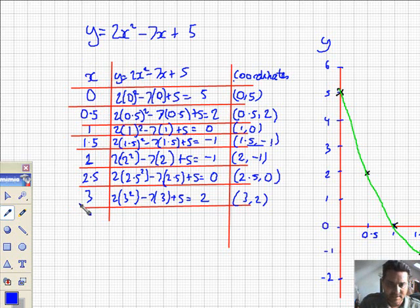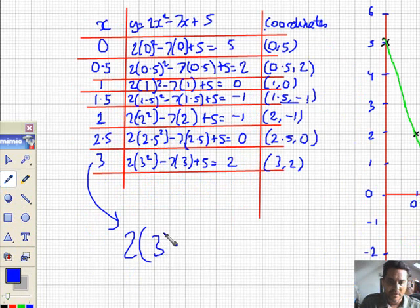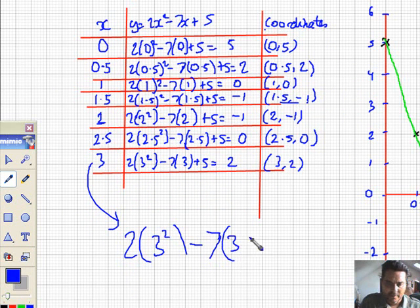And so if I take this as an example, if I plug 3 into this formula here, let's just do it in that big size. I go 2 times 3 squared, then take away 7 lots of 3 and then add 5. Now if I do that with my calculator, 3 squared is 9, 2 times 9 is 18. Take away 21, 7 times 3 is 21.